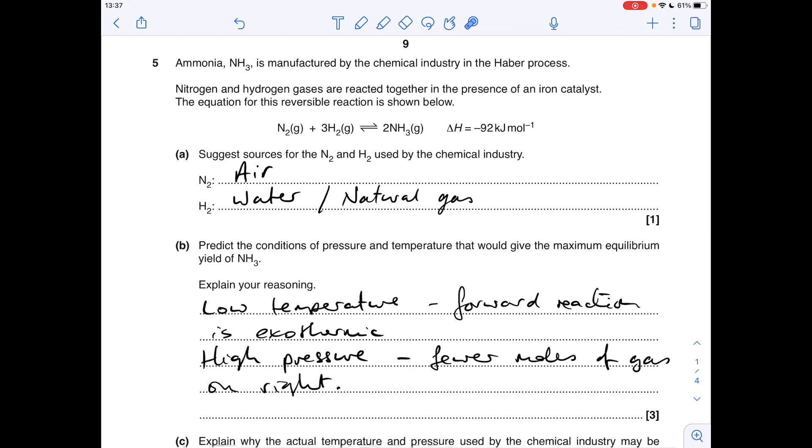Part B is classic Le Chatelier's principle. We've got to predict the conditions of pressure and temperature that would give the maximum equilibrium yield of ammonia. In other words, which conditions would favour the forward reaction.